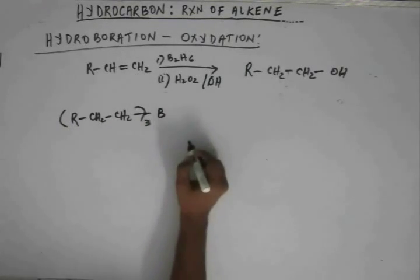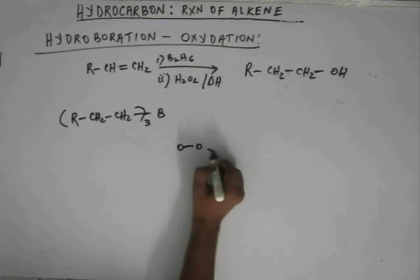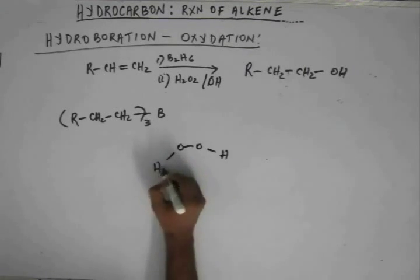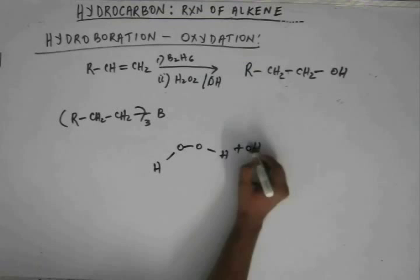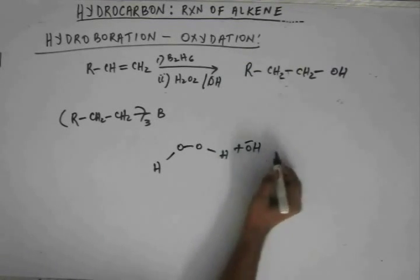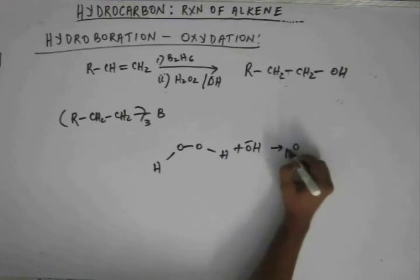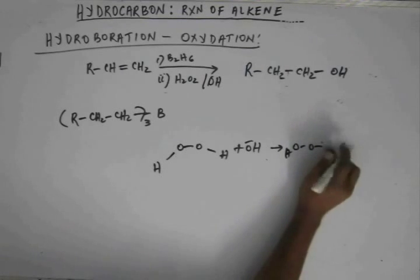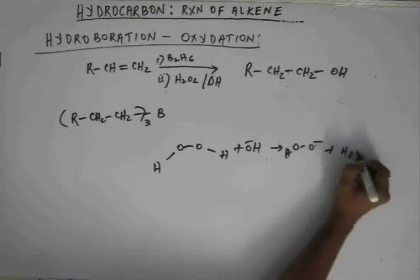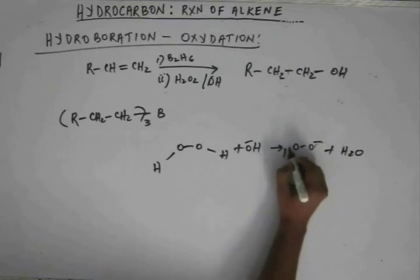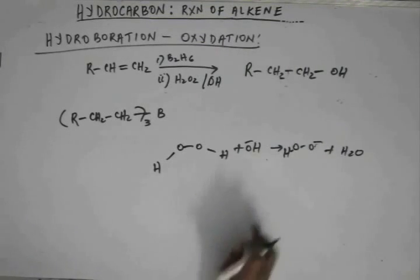We have trialkyl boron. This hydrogen peroxide has this kind of structure and when we have a basic medium, then this hydrogen is abstracted from the base and we have hydrogen peroxide ion like this and this water comes out.